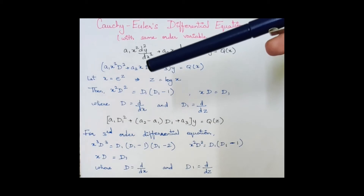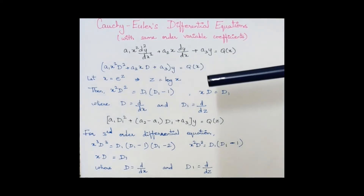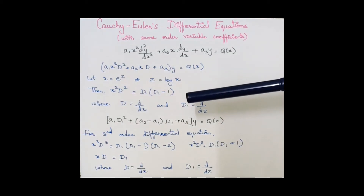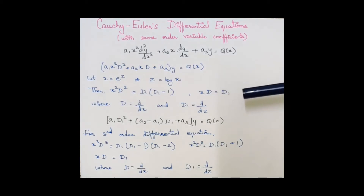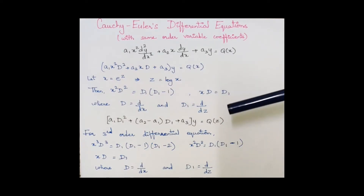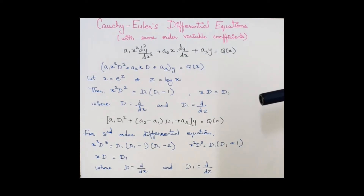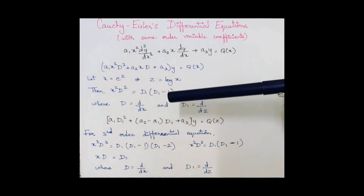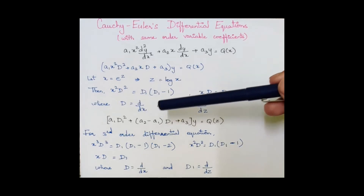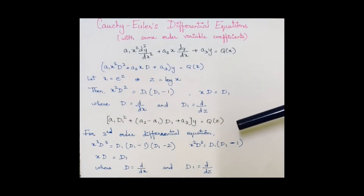First, we substitute x = e^z, so z = log x. We observe that x²D² can be written as D1(D1 - 1), and xD can be written as D1, where D is d/dx and D1 is d/dz, a new variable we introduce. On substituting, the equation becomes a1·D1² + (a2 - a1)·D1 + a3)·y = q(z).